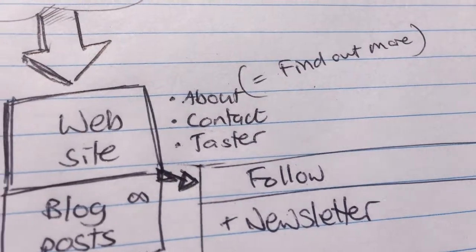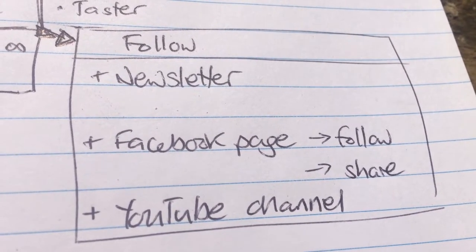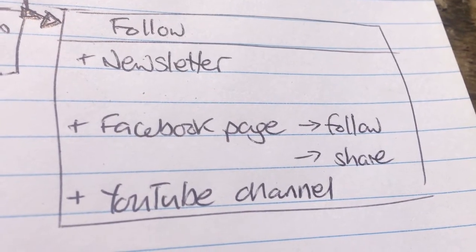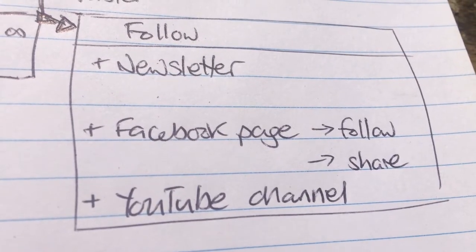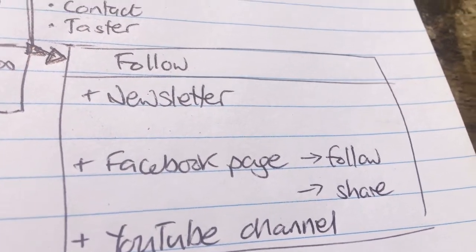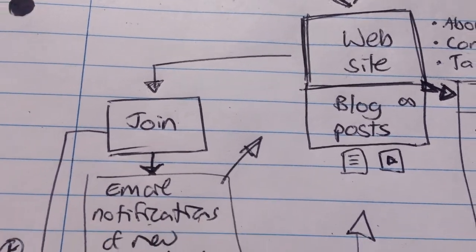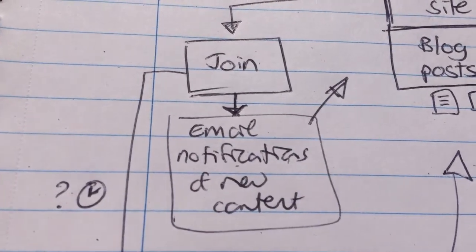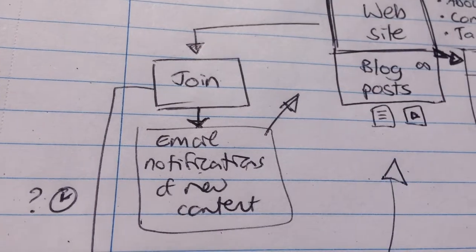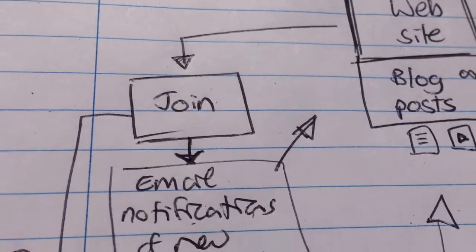So people find me, they come to the website, find out more about me, and then we need to look at follow. The main follow channels are going to be my newsletter — you can sign up on any page of the website. There's also the Facebook page for Expert Liberation, and the YouTube channel for the video-oriented version. From the website, people will be able to join by direct access, and when they join I'll be able to send them email notifications about new content, because they'll be on my membership system — in my case MemberPro. Blog posts here can be text or video.